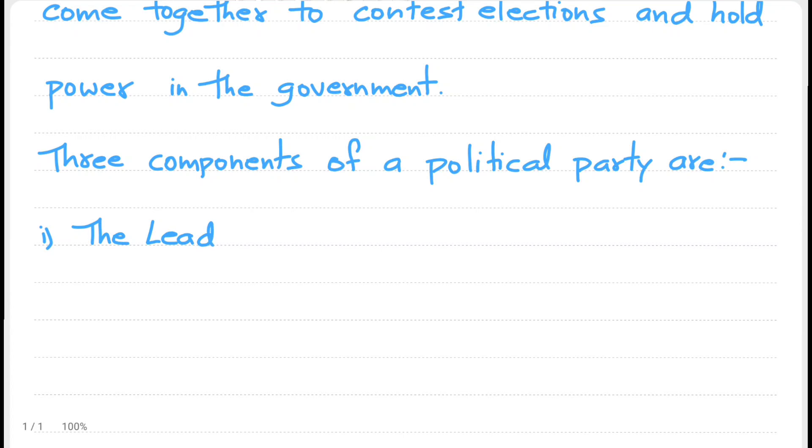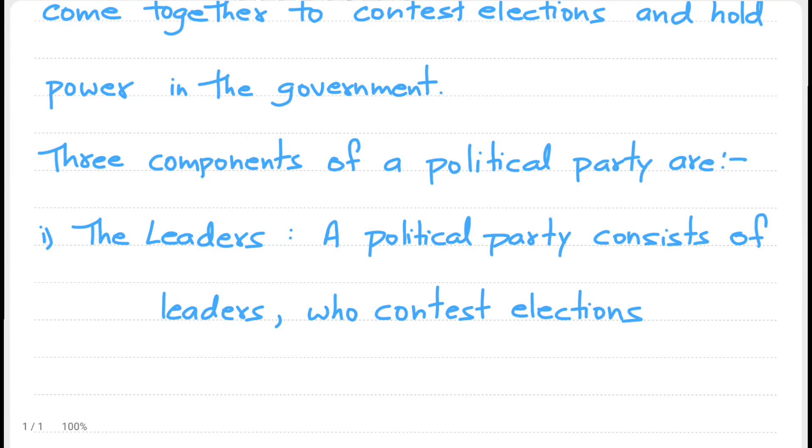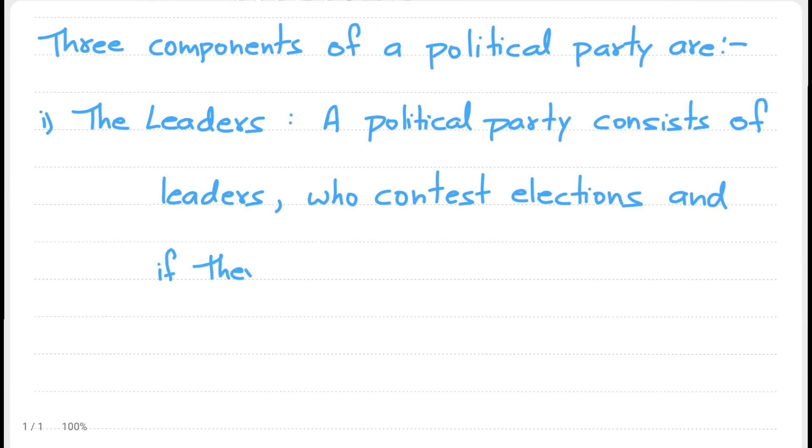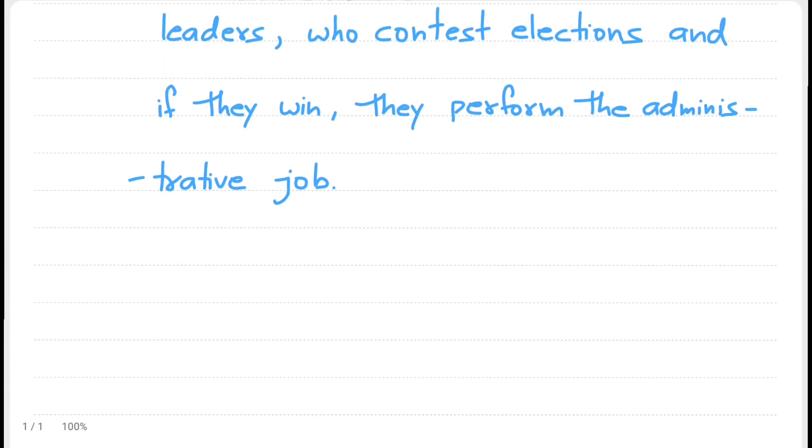The three components of a political party are: First, the leaders. A political party consists of leaders who contest elections, and if they win, they perform the administrative job.